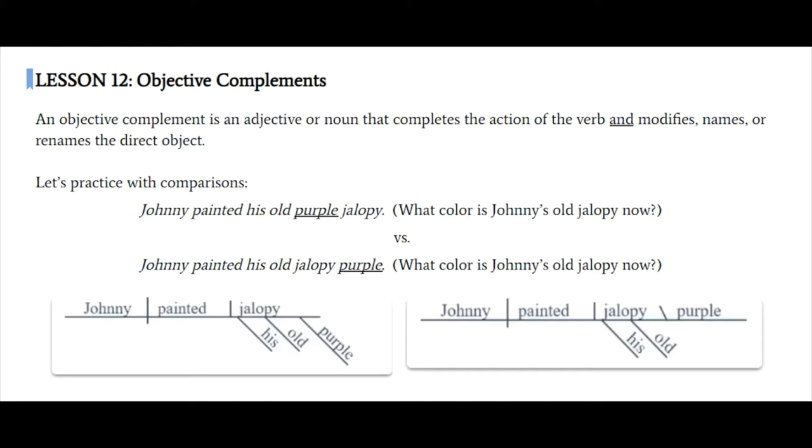As opposed to in sentence two, Johnny painted his old jalopy purple. So we still have Johnny painted, and then the direct object is jalopy. But purple in this case answers the question, painted how? So he painted the jalopy how? He painted it purple. And you'll see that purple modifies jalopy, but it also completes the action of the verb. And this is how we diagram an object complement. After the direct object, we have a slanted line pointed back over jalopy toward painted. And then the object complement goes on a straight line after the slanted line.